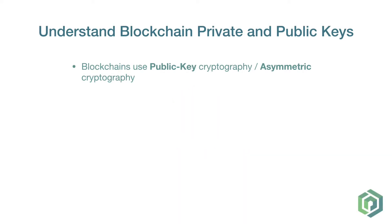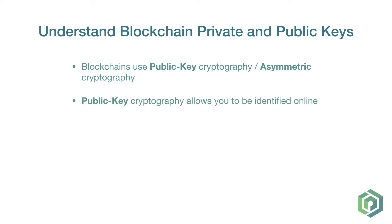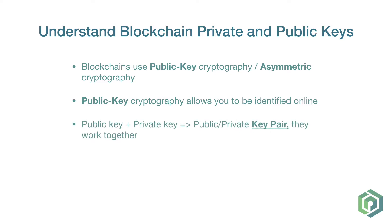Blockchains use public key cryptography, also called asymmetric cryptography. This means that online user identities are not represented with an email and a password, but with a public and a private key. The public-private key pair is similar to the email-password pair — both are supposed to work together.